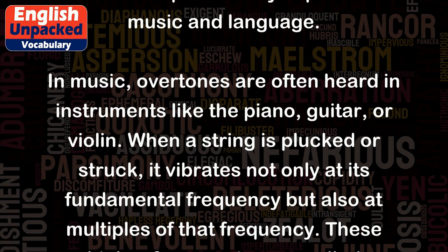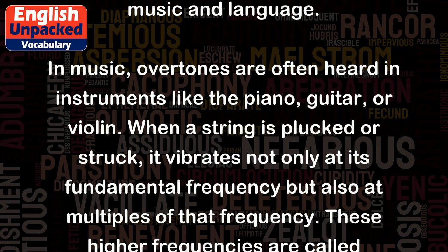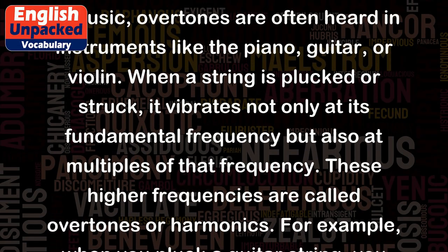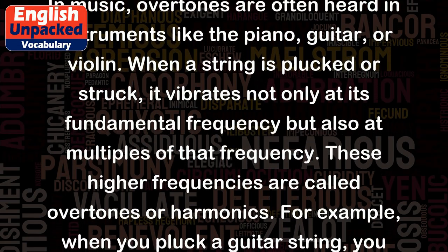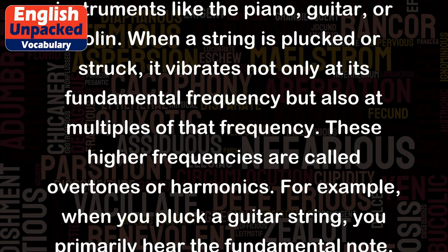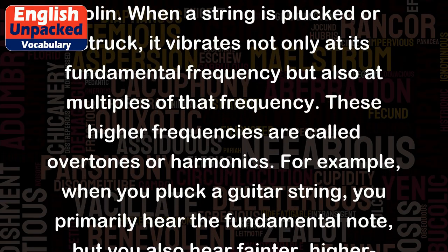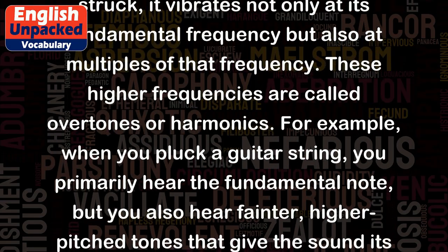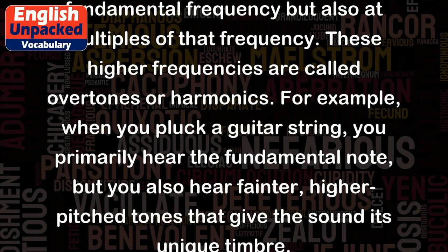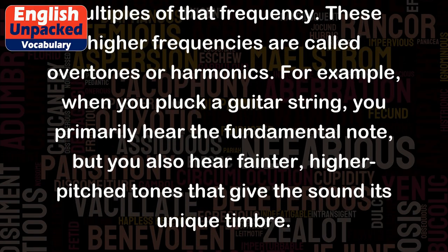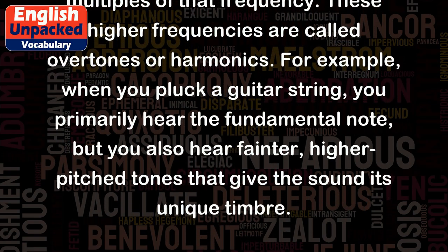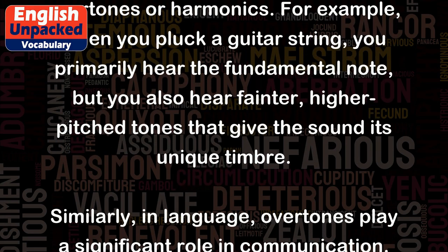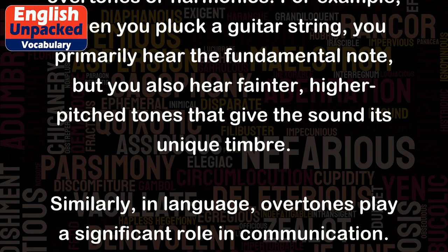When a string is plucked or struck, it vibrates not only at its fundamental frequency but also at multiples of that frequency. These higher frequencies are called overtones or harmonics. For example, when you pluck a guitar string, you primarily hear the fundamental note, but you also hear fainter, higher-pitched tones that give the sound its unique timbre.